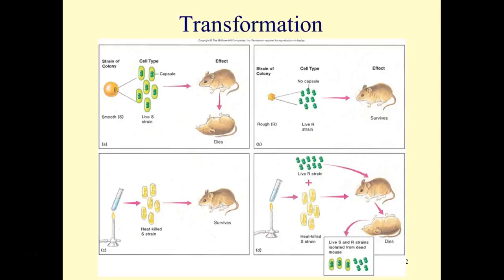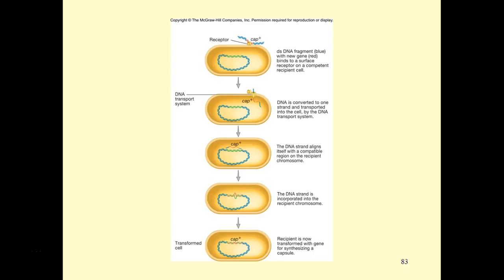In our lab, we won't be using mice, but we will transform an E. coli that cannot glow in the dark — because it lacks the gene for green fluorescent protein — into one with that gene so it will glow. The gene for the capsule is present on a small piece of DNA. The double-stranded DNA fragment with the new gene binds to a surface receptor on a competent recipient cell. DNA is converted to one strand, transported into the cell by the DNA transport system, and aligns with a compatible region on the recipient's chromosome. The DNA strand is incorporated into the chromosome, and now the recipient is transformed — it has a gene for synthesizing a capsule.